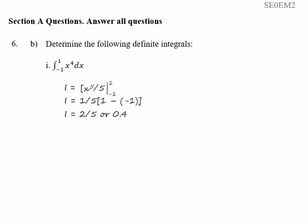Part two. We've got a polynomial now, so we increase the power of the first term to three, giving us three x cubed over three, or just x cubed. We get two x squared over two, or just x squared, and then five x.